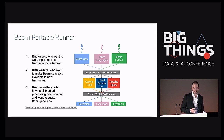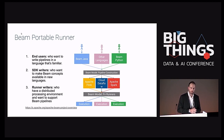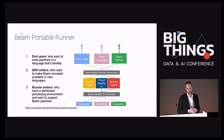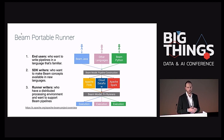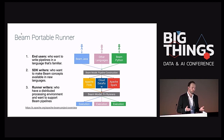Apache Beam is a framework for distributed processing — more of a programming model built on top of Apache Spark, Flink, and different runners. What it gives you is a way to write your distributed processing programs in one language of your choice, and then Apache Beam will execute your code on different runners, whichever runner you have in your platform. In our case it's Apache Flink, because for on-prem solutions it is the most mature one for Apache Beam. If you're on GCP, you would probably use Dataflow.